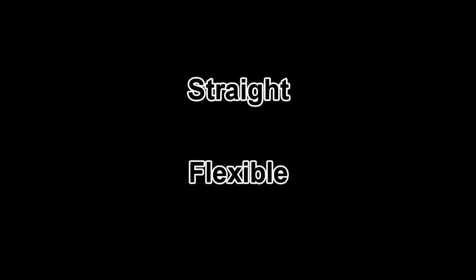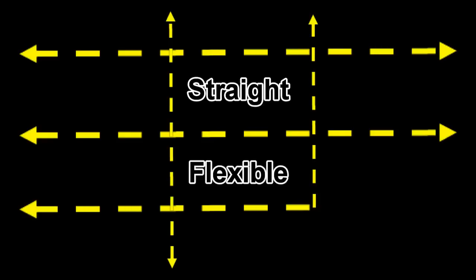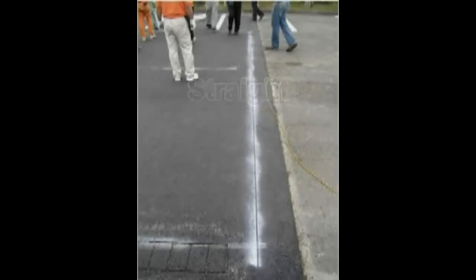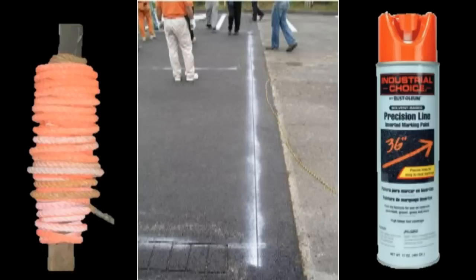Border lines — there are two types of borders, straight or flexible, and both require layout lines. All straight borders should be aligned with the surrounding pattern or coordinated with the centerline, then marked using rope and marking paint to ensure they're straight.